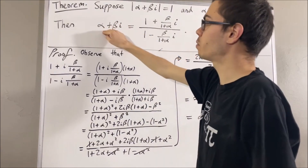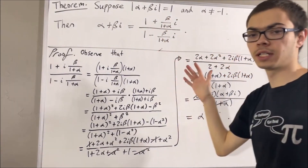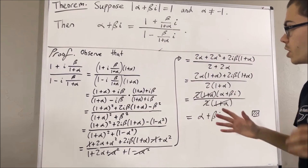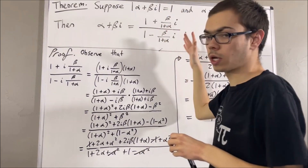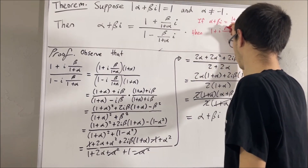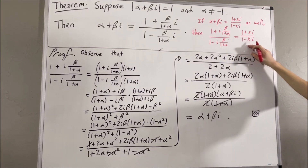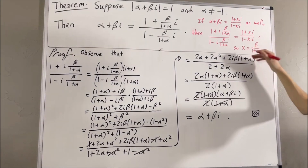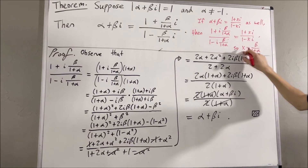What I mean by that is, if alpha plus beta i is also equal to 1 plus xi over 1 minus xi for some real number x, then x has to be equal to beta over 1 plus alpha — it has no choice. The reason why is because if alpha plus beta i is equal to 1 plus xi over 1 minus xi as well, then we have that these two expressions are equal. But, this implies x is equal to beta over 1 plus alpha. You can verify this just by cross-multiplying, and then setting the real and imaginary parts equal to each other, and you will obtain that x is equal to beta over 1 plus alpha.